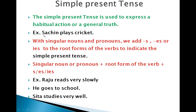Here I have given you an example — look at that: 'Sachin plays cricket.' While learning simple present tense we have to use many rules. In a sentence with singular nouns and pronouns, we add 's', 'es', or 'ies' to the root form of the verb to identify the simple present tense.